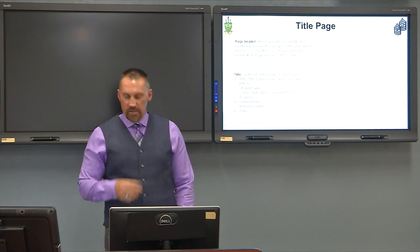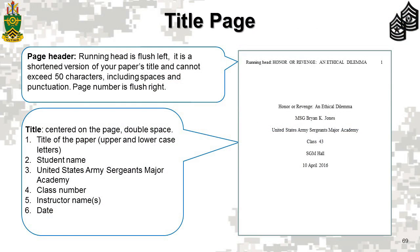So this is what your title page will look like — it should be a mirror image of this example. The only difference will be your unique title, your name, your instructor, and the due date. The running head appears at the top with the title in all capital letters and page number one in the top right corner. Centered on the page will be six pieces of information for all assignments except the Personal Experience Paper, which will have seven pieces of information on the title page.